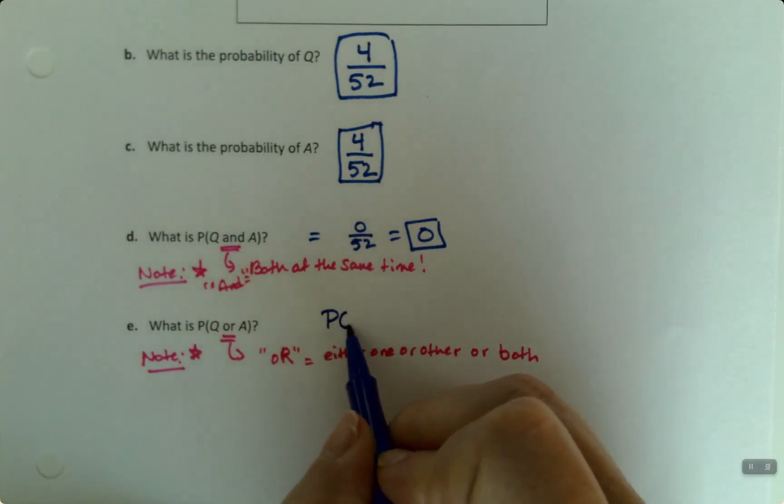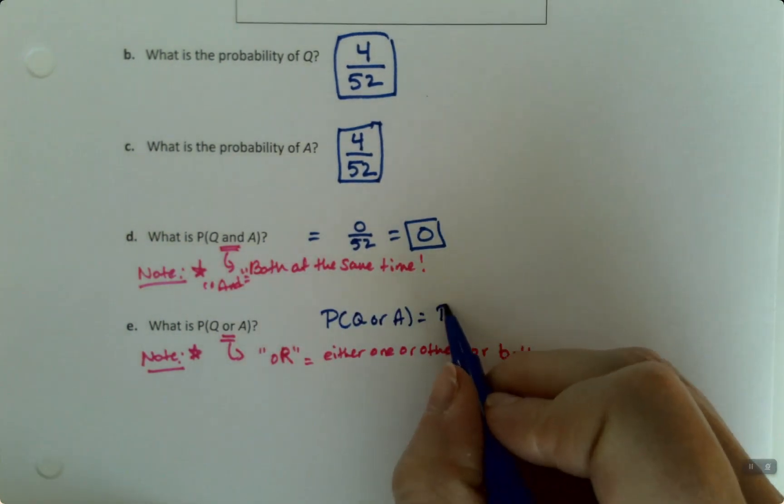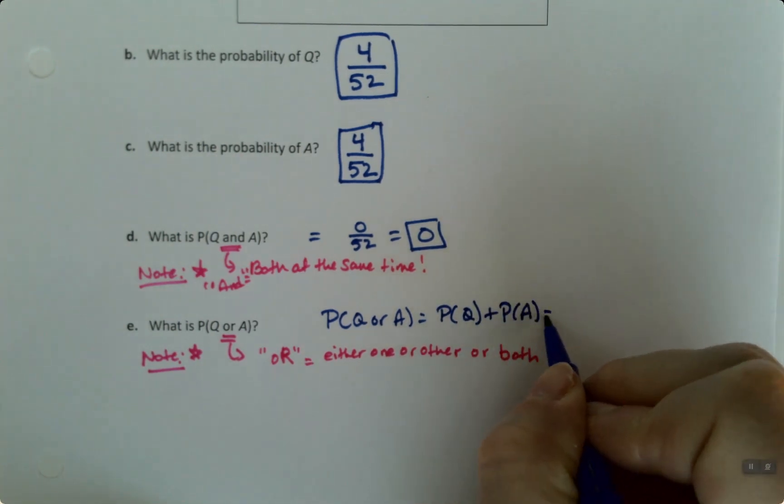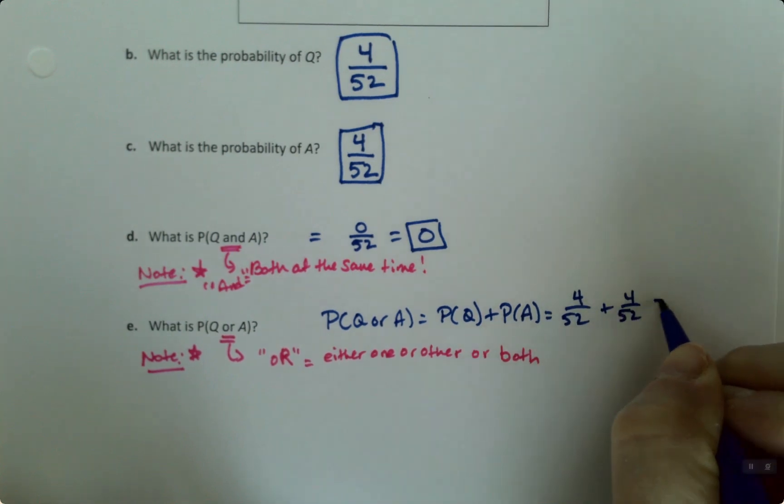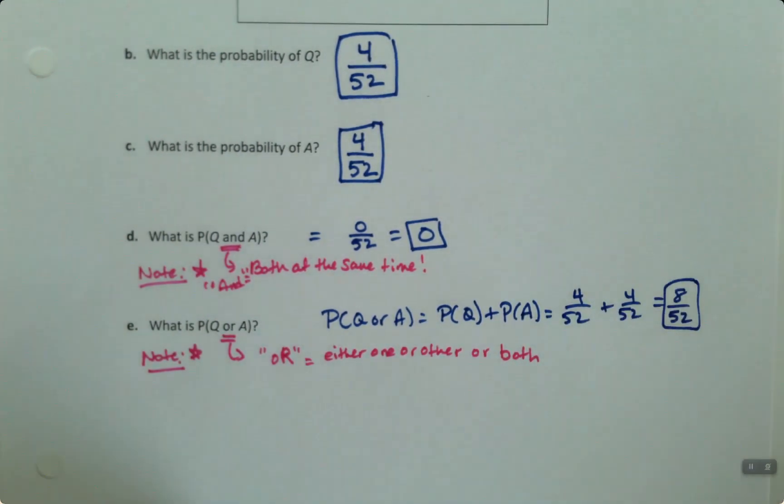If we want the probability of Q or ace, we want the probability of Q plus the probability of ace, which is 4 out of 52 plus 4 out of 52, which is 8 out of 52.